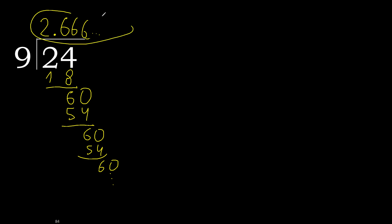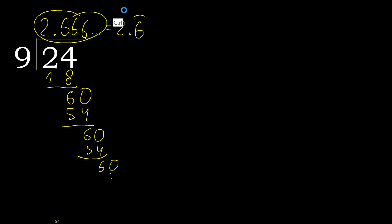24 divided by 9 is: after the decimal point, 6 repeating — like this, repeat. Equal.